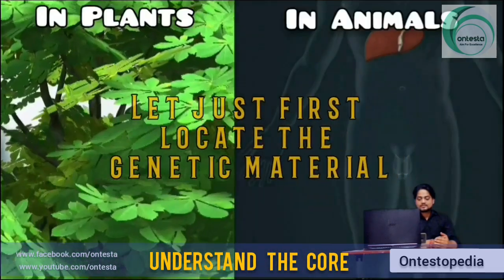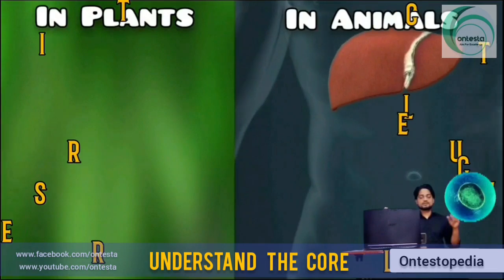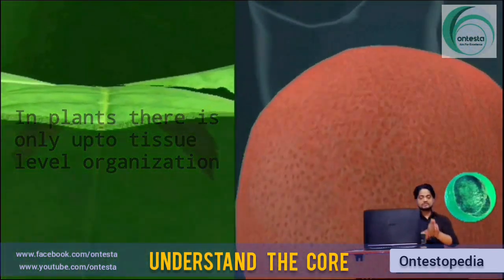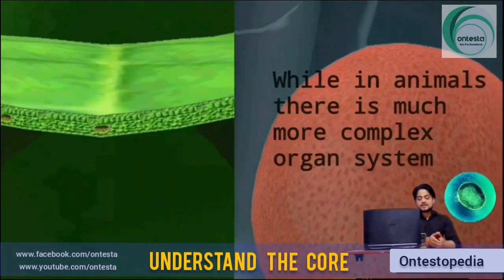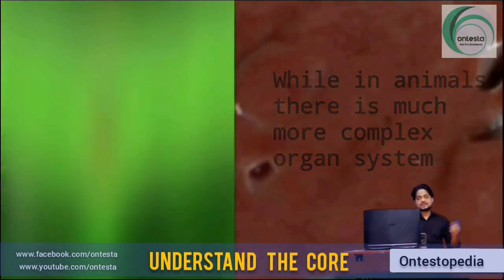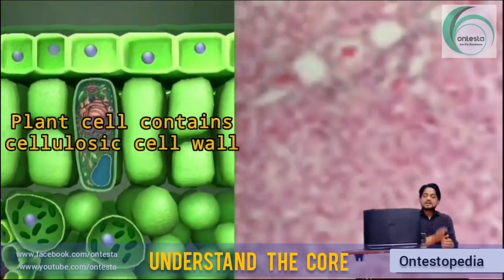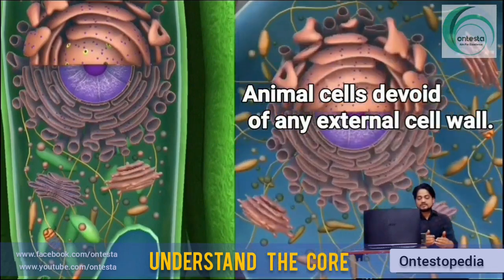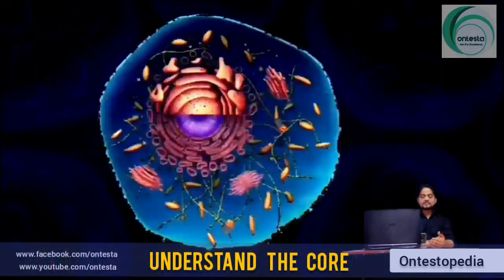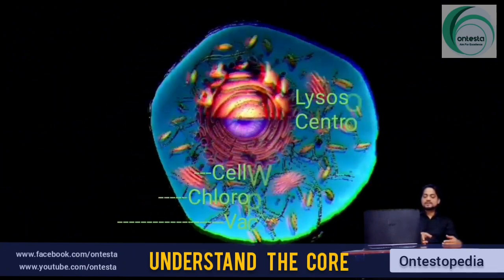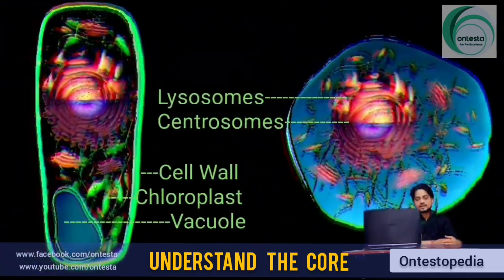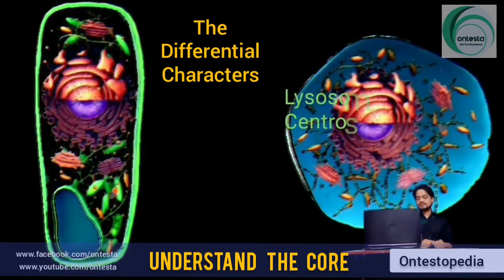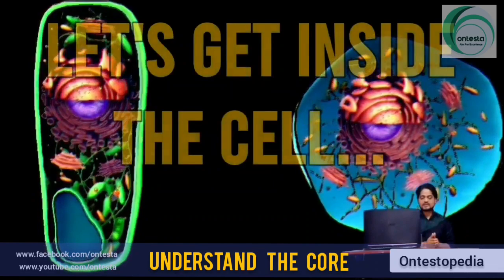Let's first locate the genetic material. Both plant and animal cells differ in their level of organization. In plants, there is only up to tissue level organization, while in animals there is a much more complex organ system. Plant cells contain a cellulosic cell wall, while animal cells are devoid of any external cell wall. Plant cells also contain chloroplasts and vacuoles, while animal cells have lysosomes and centrosomes — these are unique features that differentiate them.